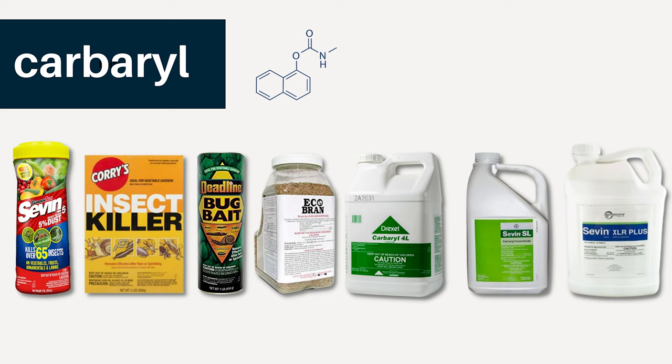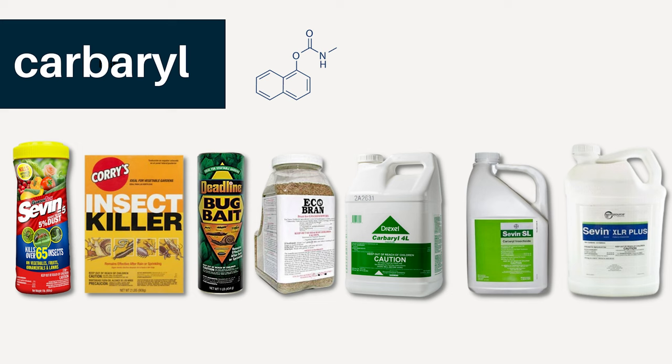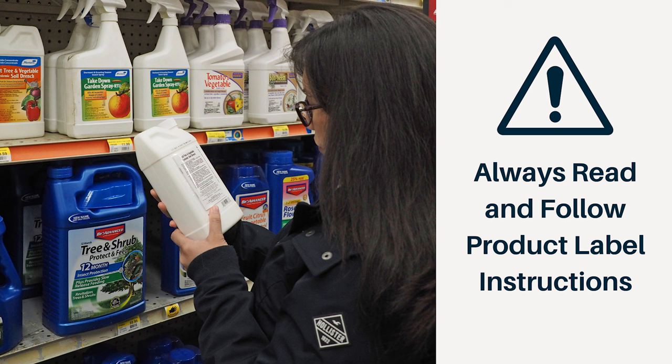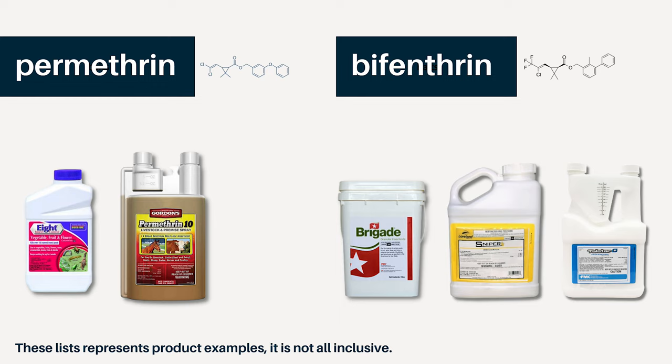Malathion and carbaryl are relatively non-toxic to humans and may be sprayed to kill grasshoppers along the roadsides and fences. Make sure you follow the label instructions. Listed here are other products that are labeled for grasshopper control in the state of Utah. These sprays will be most effective when used against nymphs rather than the adults.